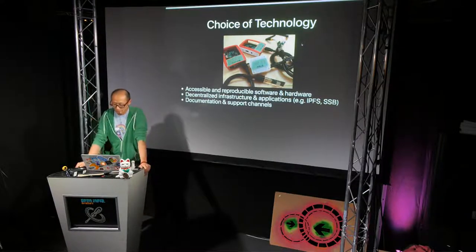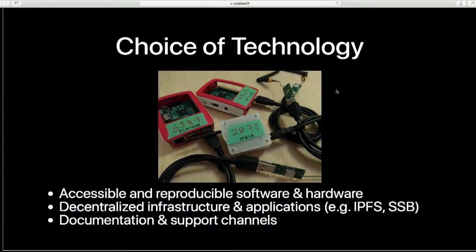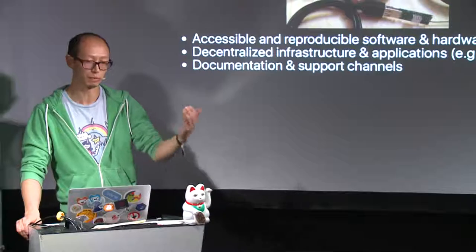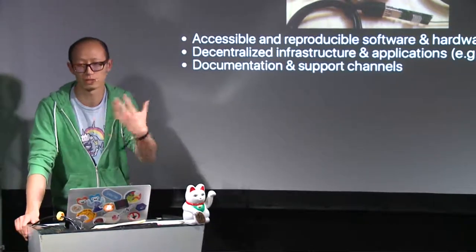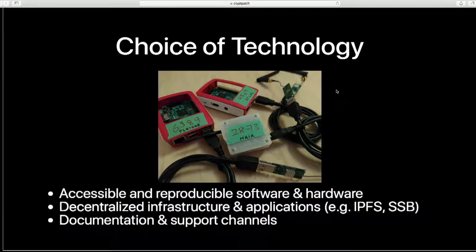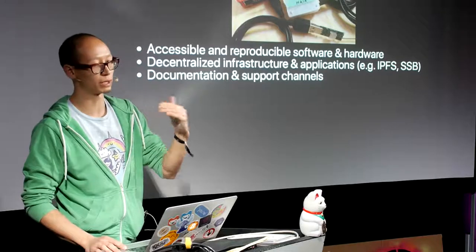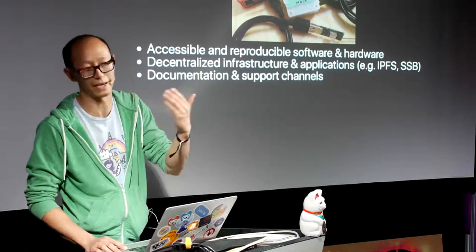Some of the things Udit talked about became our guiding principles in how we choose technologies. We want to build stuff that is accessible and reproducible — something like Raspberry Pi hardware is something anyone can easily get access to, and if software runs on one it'll run on another. We want our work to not just be local — it can be taken somewhere else and used. We're not focusing only on decentralized infrastructure but also applications, integrating with things like IPFS and SSB to bring content into the mesh network itself. When we deploy or build technologies, we always think about how to document things well and have active support channels where people can get an answer within the hour.